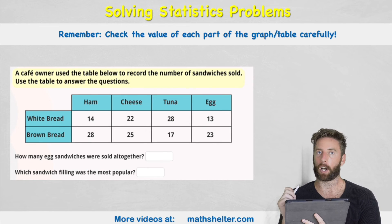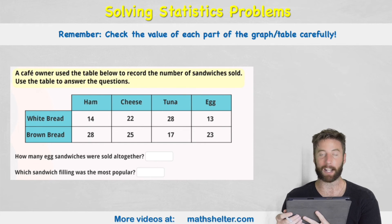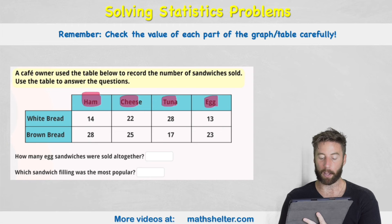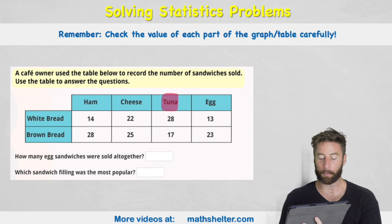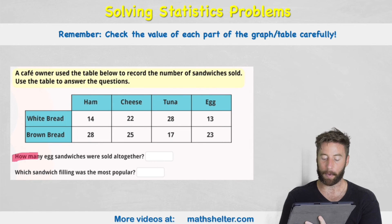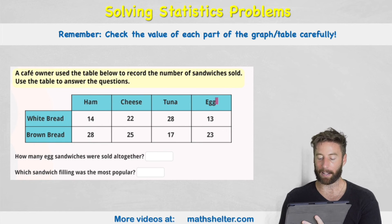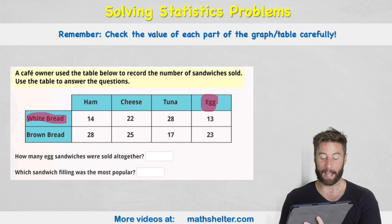Last examples. These are much harder questions. We can see here it says a cafe owner uses the table below to record the number of sandwiches sold. Use the table to answer the questions. So we can see here we have ham, cheese, tuna and egg sandwiches and then we have them sold on either white bread or brown bread. So if I wanted to work out how many tuna sandwiches were sold on brown bread I would look to this answer here which is 17. But that's not what my question says. My first question says how many egg sandwiches were sold all together? Okay well let's look at my egg column.